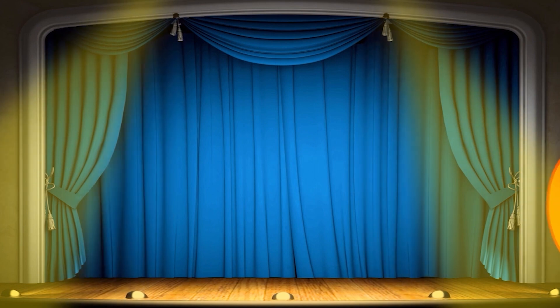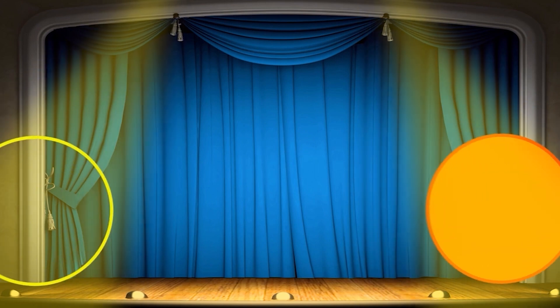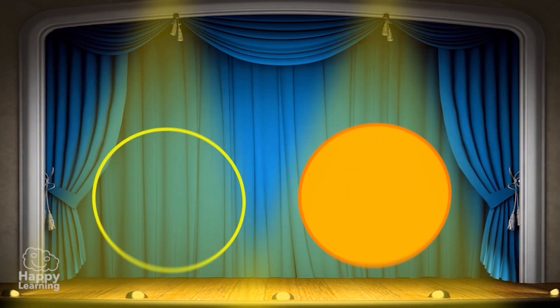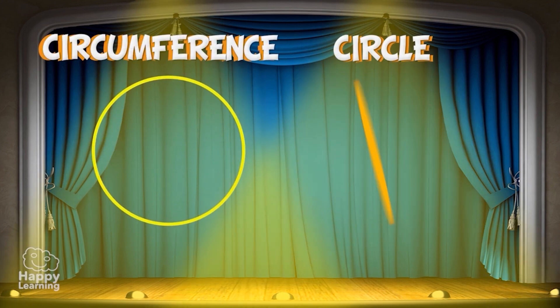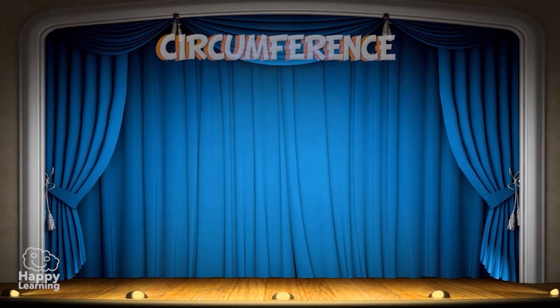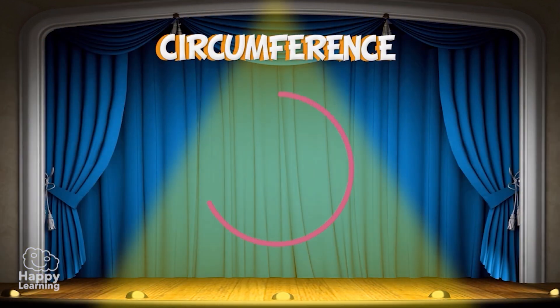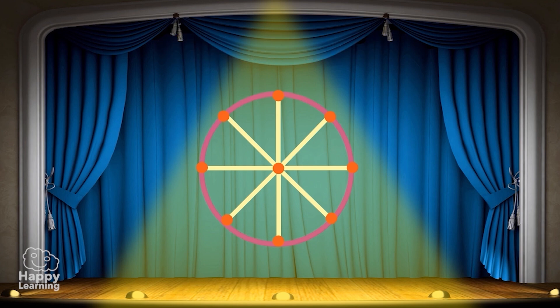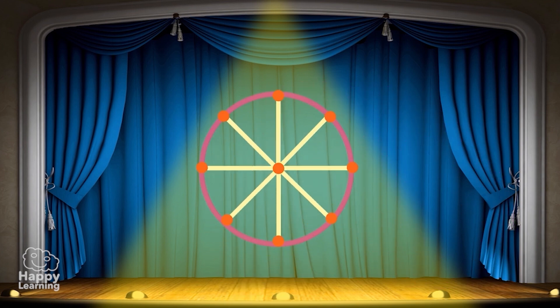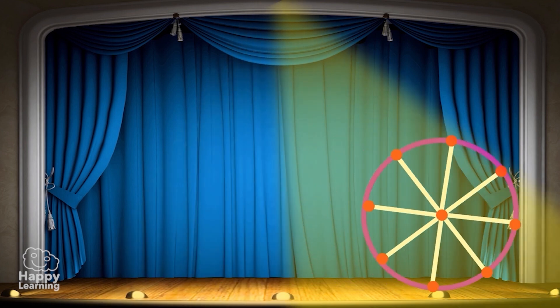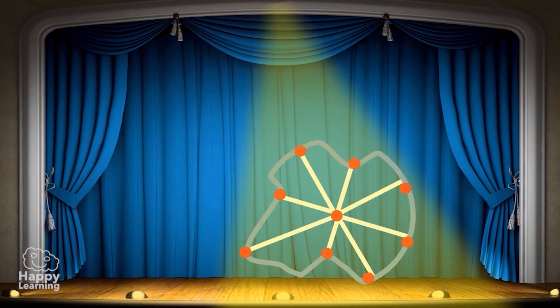Hello friends and welcome to a new Happy Learning video. Today we're going to learn about a circumference and circle. A circumference is a closed curve where all points are at the same distance from the center. See it here: we can observe that all points from the circumference are at the same distance to the center. If it wasn't like that, it wouldn't be a circumference but rather something strange, don't you think?